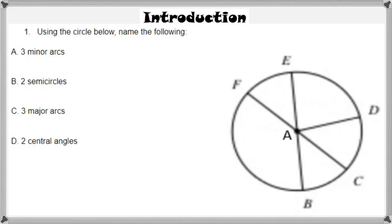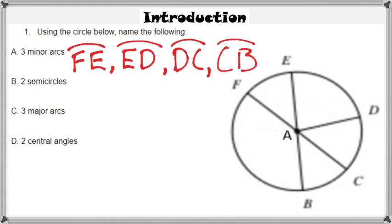With circles, there are certain vocabulary words that involve the circumference of a circle. We're going to go over the difference between a major and minor arc, as well as what a semicircle and a central angle are. A minor arc is an arc that has a measurement that is less than 180 degrees.